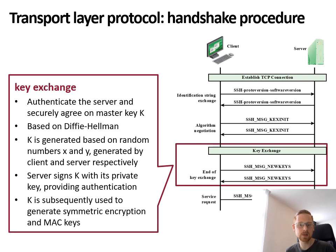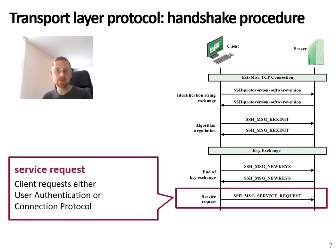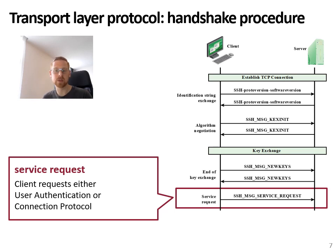The master key K is then used to generate symmetric keys and keys for message authentication using a pseudo-random function. As a final step in the handshake procedure, the client can send a service request where they either ask the server for user authentication, or ask for the connection protocol to set up a connection and start transmitting data.